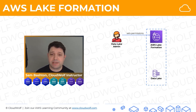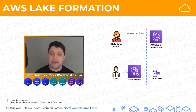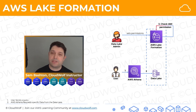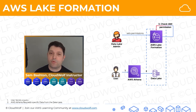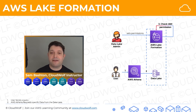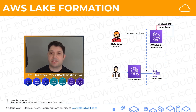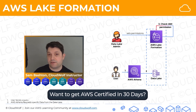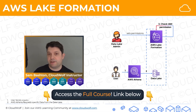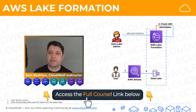The main thing that lake formation lets you do is it lets you, as a data lake admin, allocate fine-grained permissions to users. In particular, you can allocate permissions not just on a database level or a table level, but actually on a row or even column basis. For example, you might want to let data analysts have access to the data within the data lake, but not have access to any of the personally identifiable information — people's names, addresses, and phone numbers.